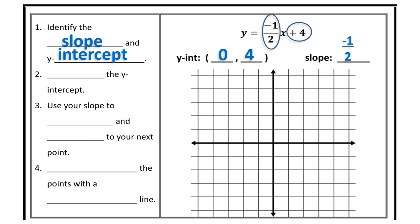After I have my slope and y-intercept, I need to plot the y-intercept. The y-intercept is at (0, 4). I can think of it two ways: start at the origin, go 0 right or left, go 4 up — or I know I'm crossing the y-axis at 4, so I just find positive 4 on the y-axis and plot a point.